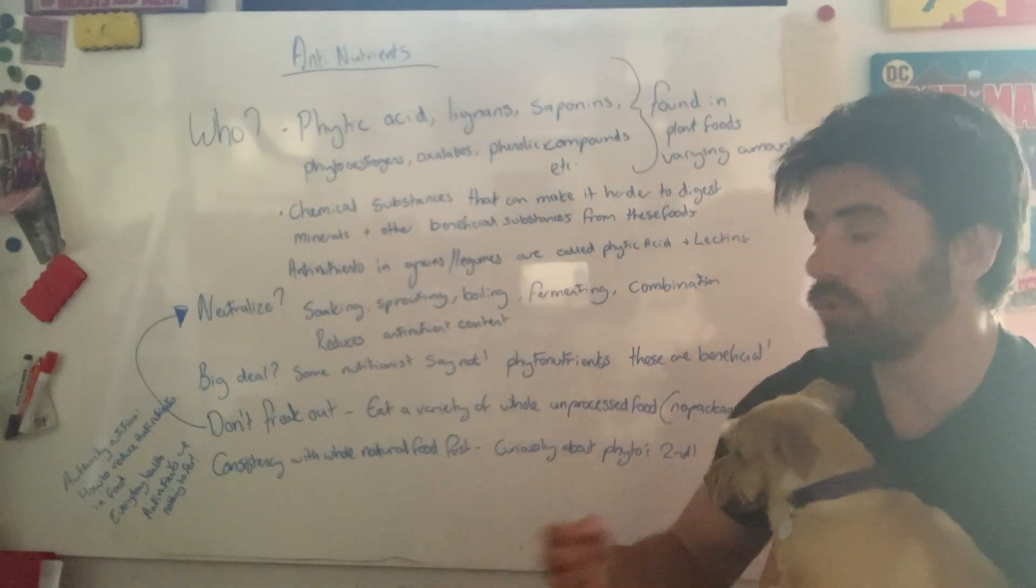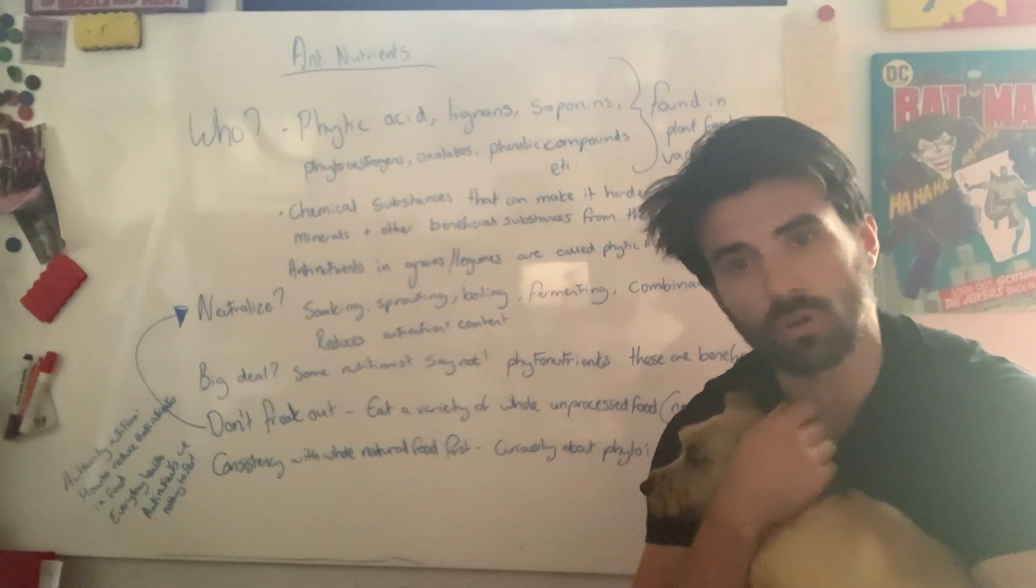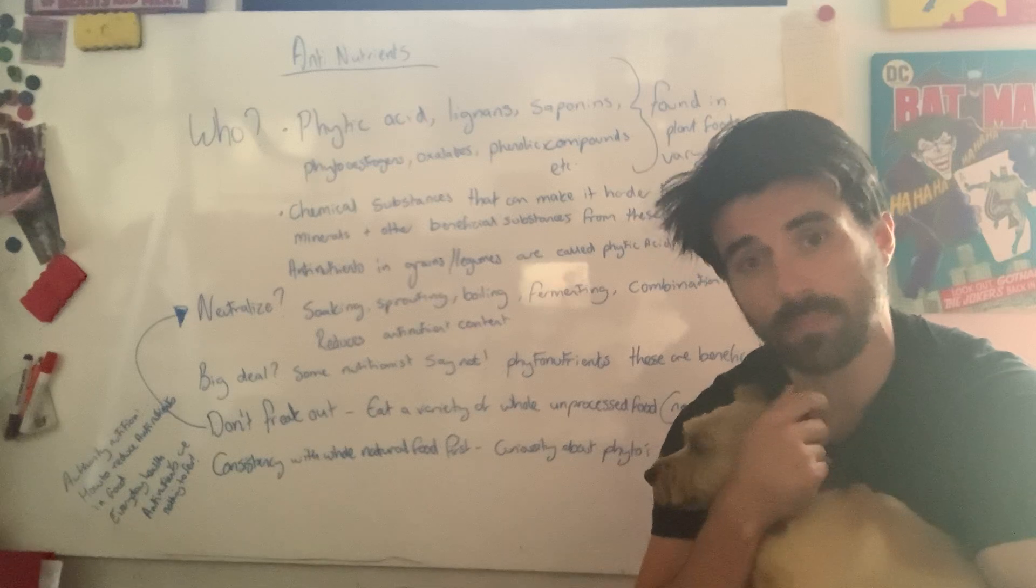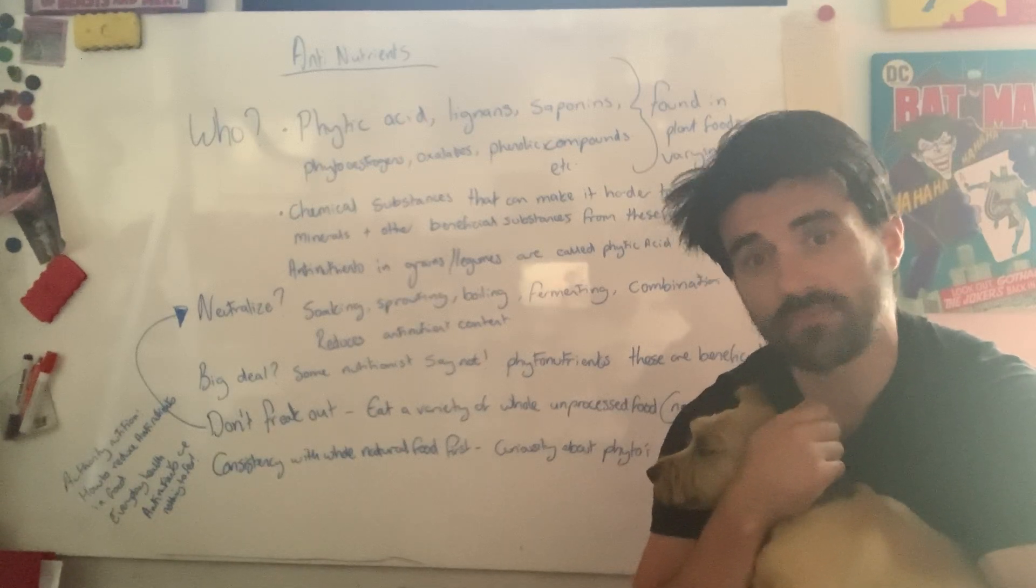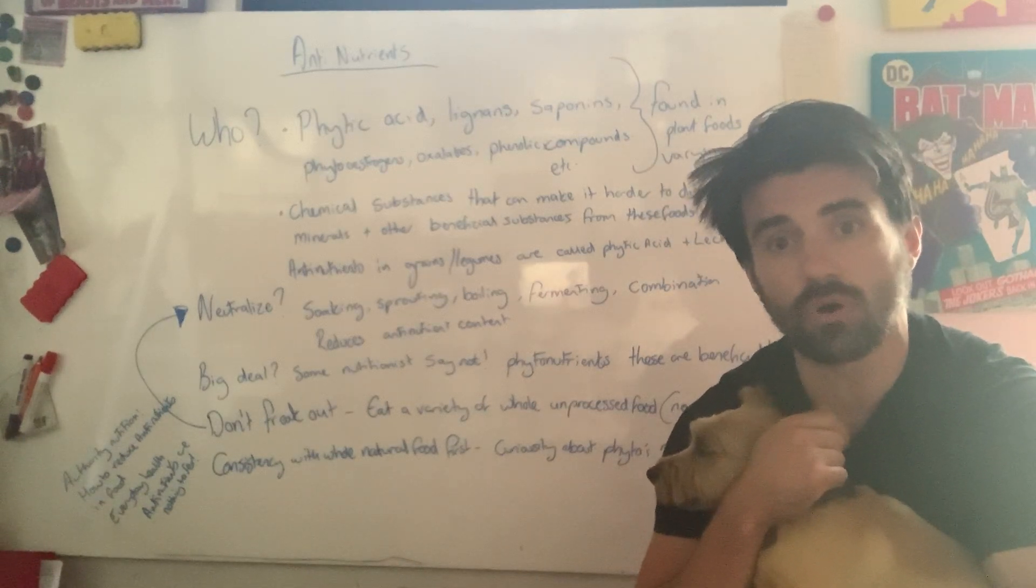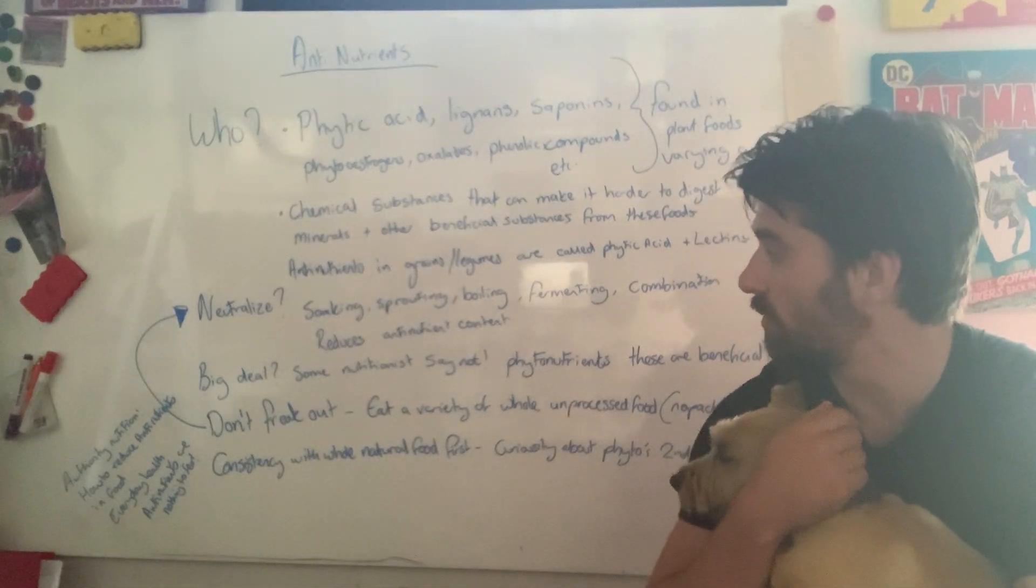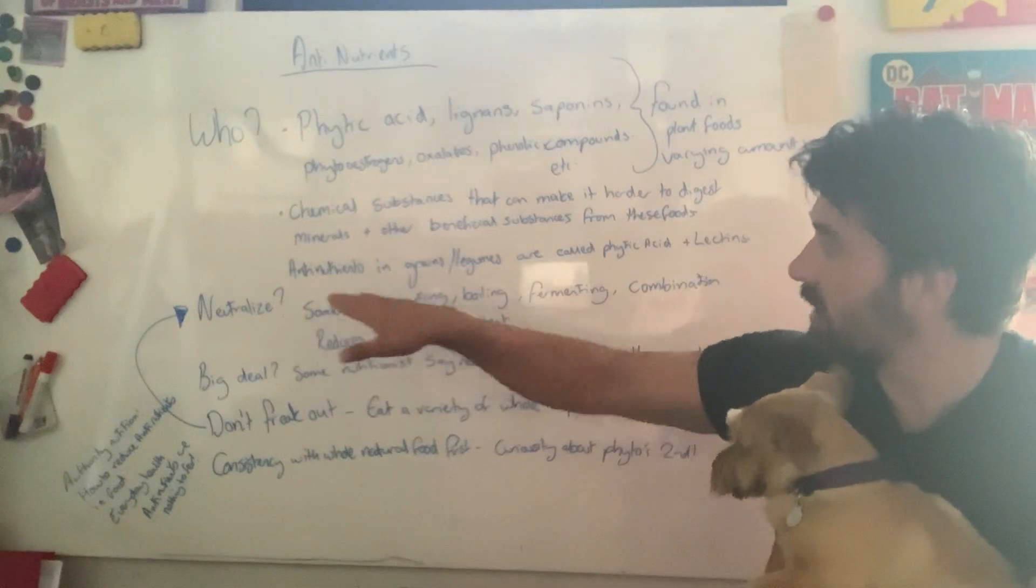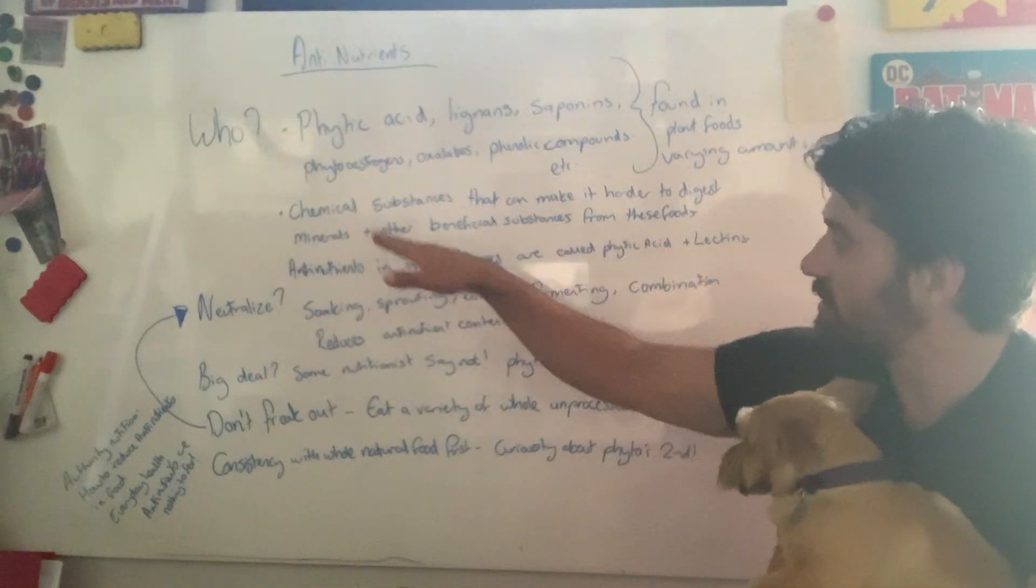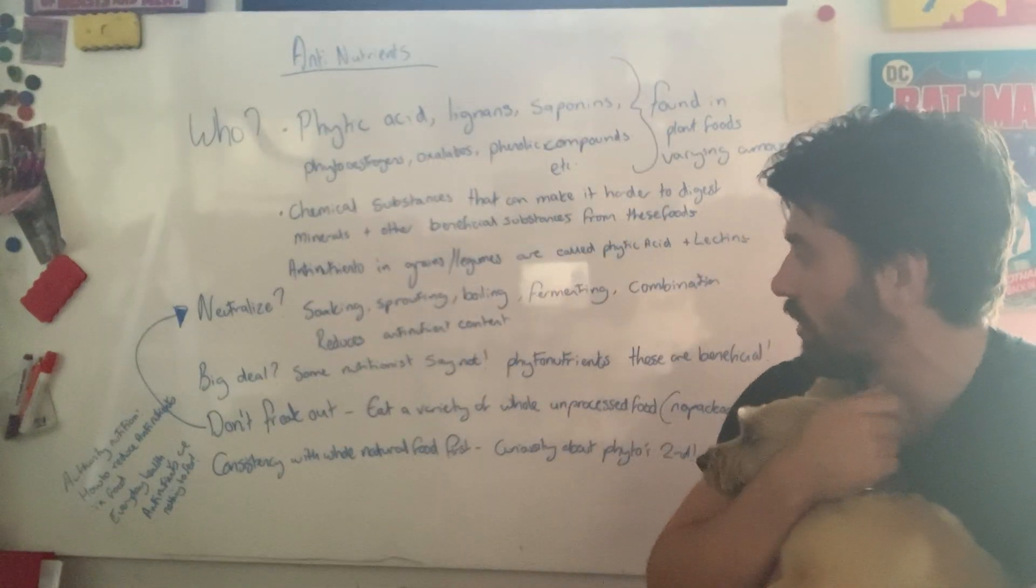Eat a variety of whole and processed foods. So we know now whole and processed foods is anything that doesn't come in a package, anything that doesn't have an ingredient list. So if you're eating those kind of foods, then you're on track of where we want to be. And if you are freaking out, just neutralize them by soaking, sprouting, boiling, fermenting, or a combination of the whole lot.